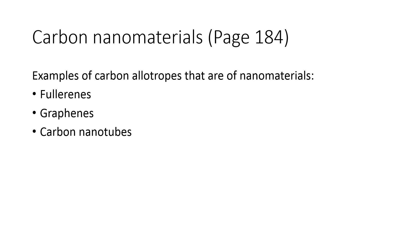All right, very good. Today we are going to continue with chapter 8.2. We are looking at carbon nanomaterials. Based on what we discussed in chapter 8.1, we thought about allotropes. Allotropes are the different physical forms of the same chemical element. The example we used is carbon allotropes, which include diamond, graphite, and amorphous carbon.